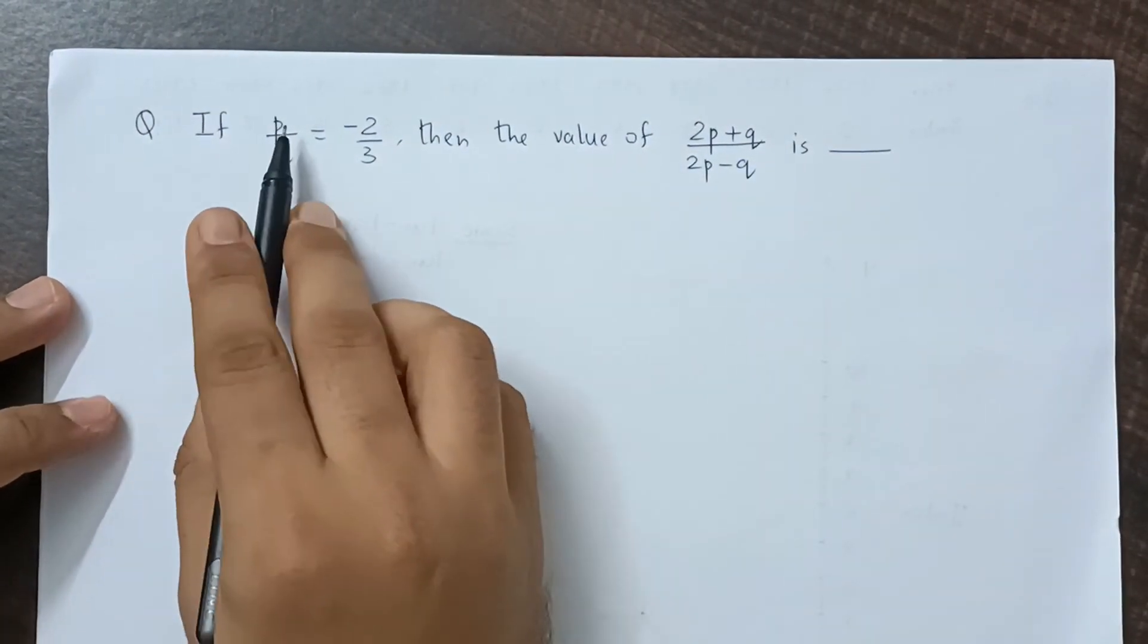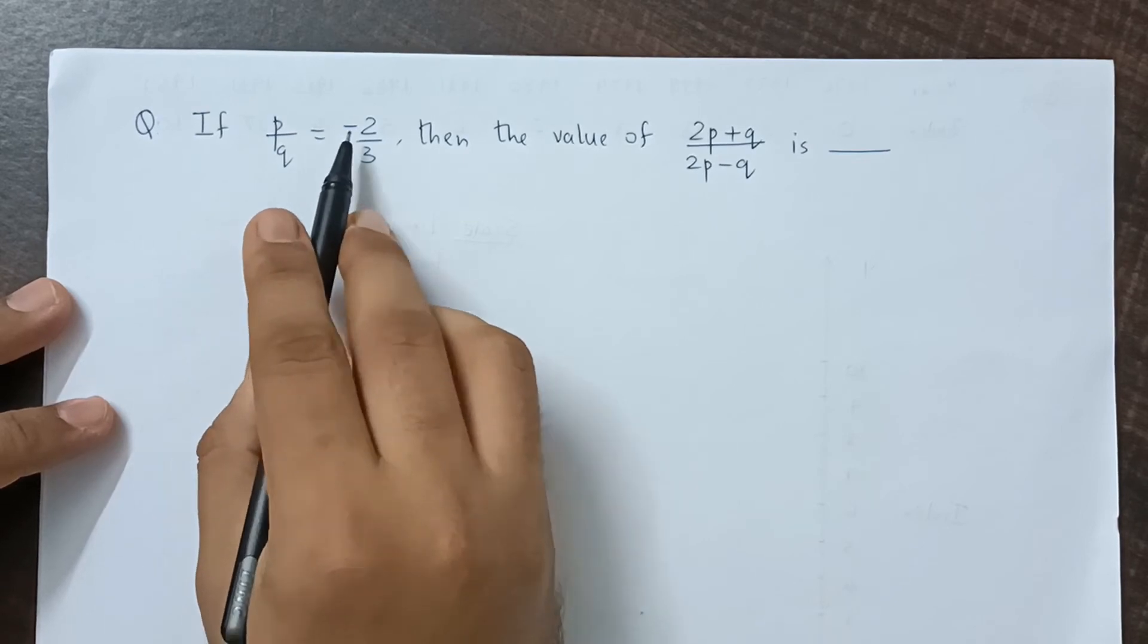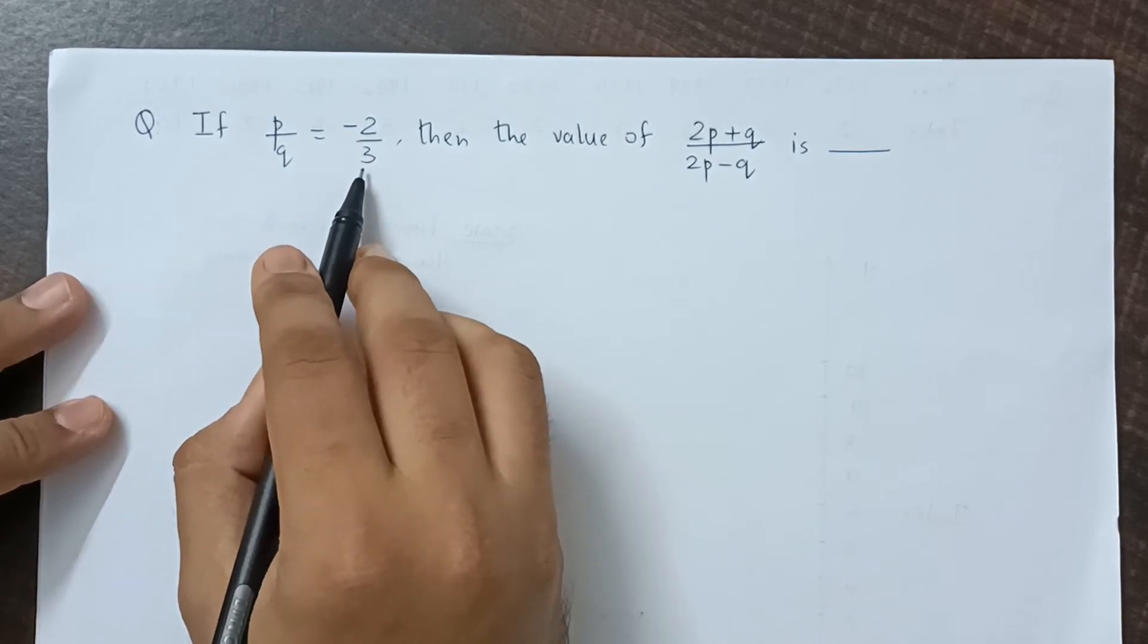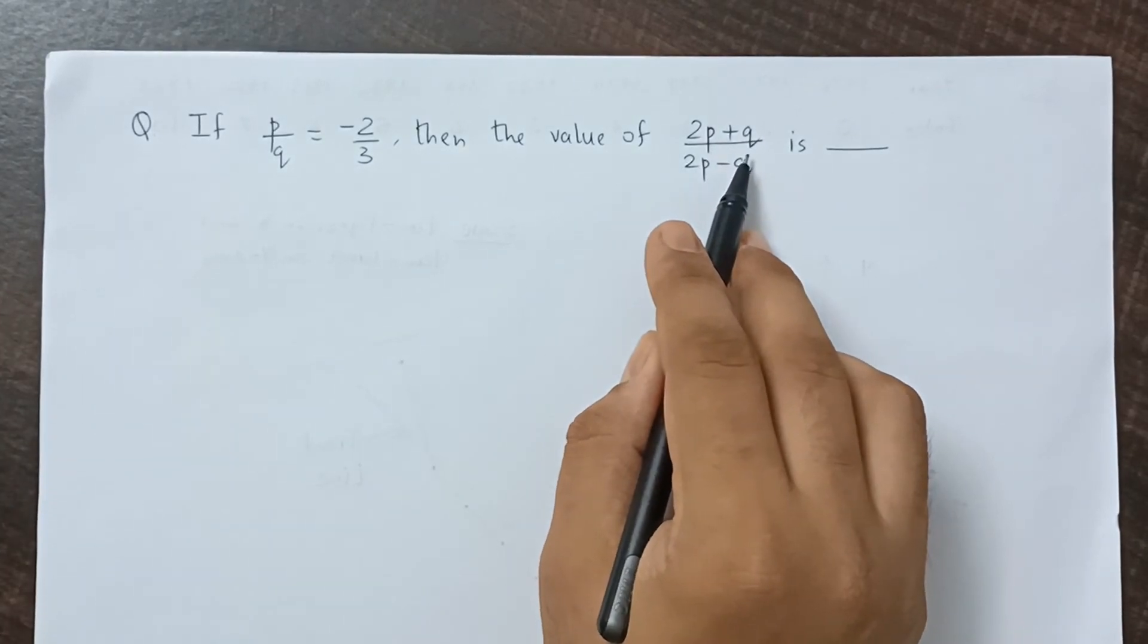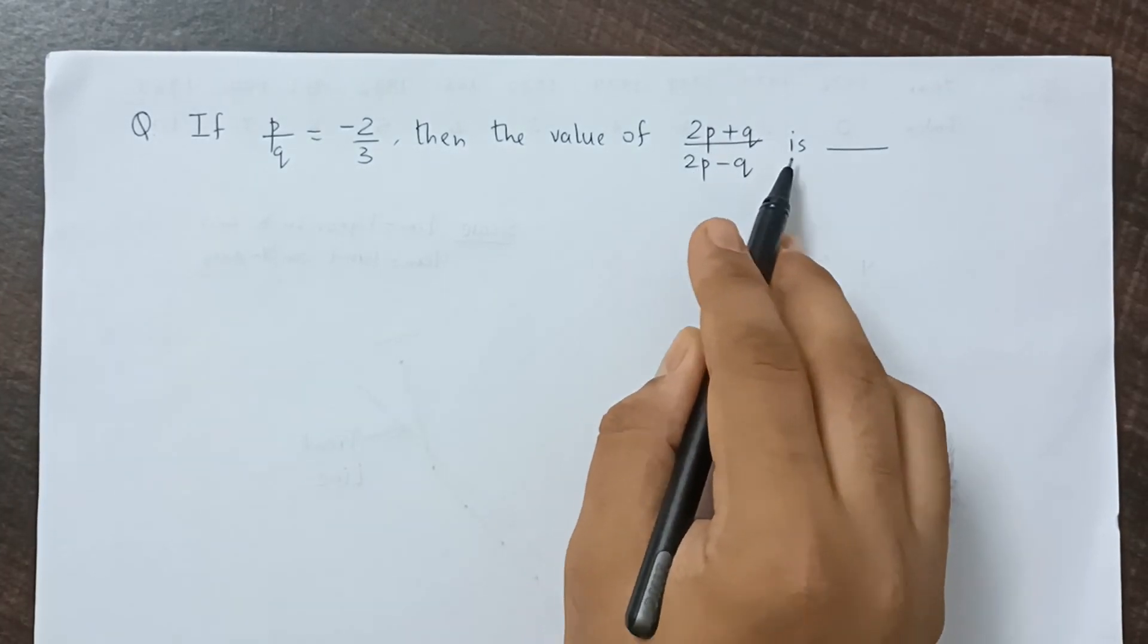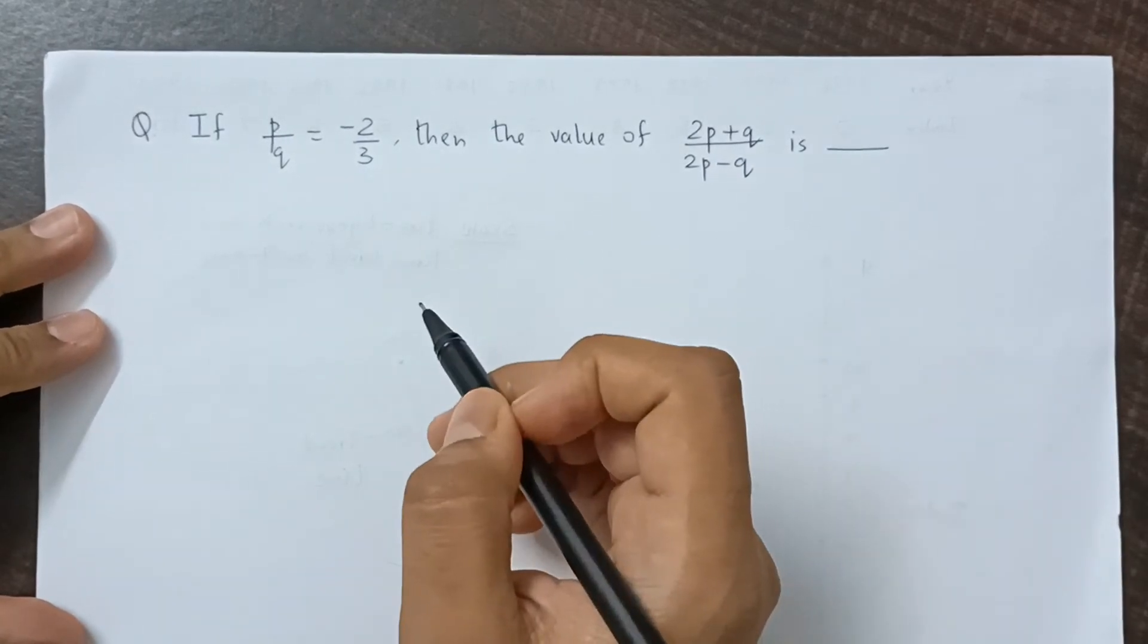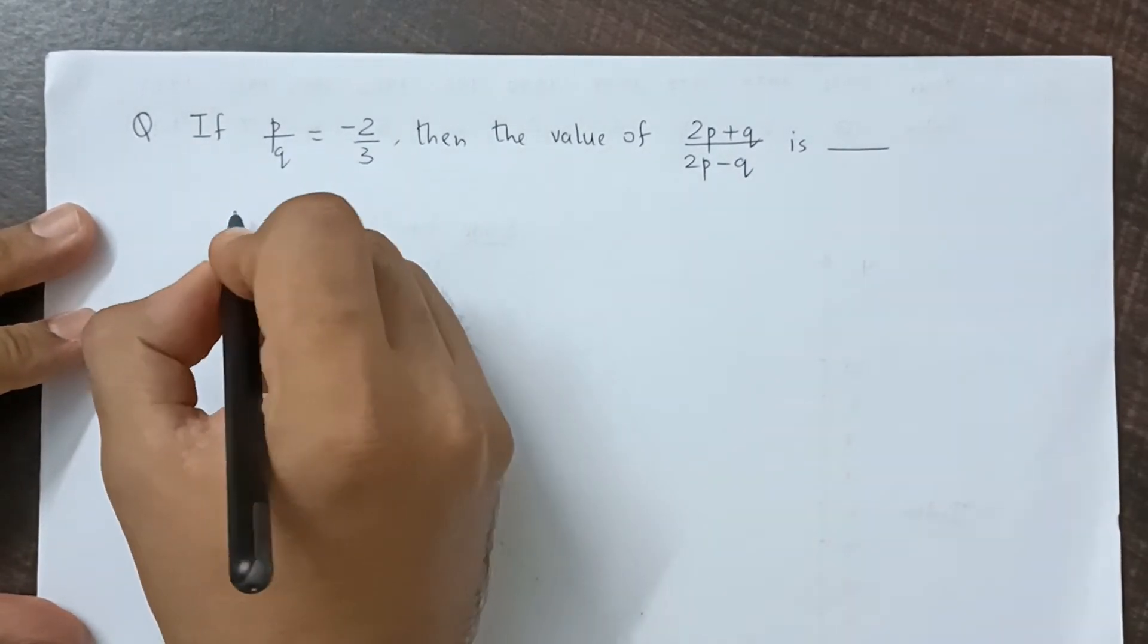In this video, if p by q, this ratio, is given as minus 2 is to 3, then the value of 2p plus q upon 2p minus q is how much? Suppose a common multiple is k.